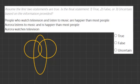For example: all humans need to eat, no human can breathe underwater. But if we look at these statements, they're saying 'happier than most people' — they're not saying all or nothing here. Based on this, we can already assume that the final answer is going to be uncertain based on the information provided.